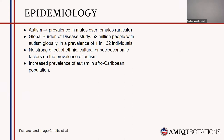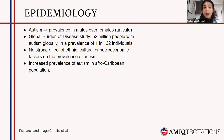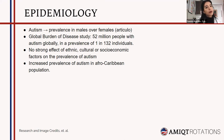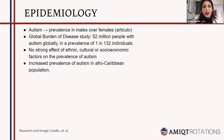According to the article by Catherine Lord, one of the most important psychiatrists specialized in autism, in 2020 there is a higher prevalence in males over females. A global burden of disease study found 52 million people with autism globally, with a prevalence of one in 132 individuals. The study found little interpretable variation between regions, cultural, and socioeconomic factors, but found an increased prevalence in Afro-Caribbean populations.